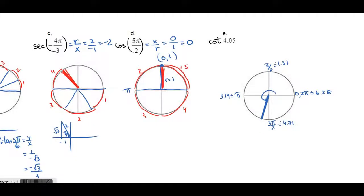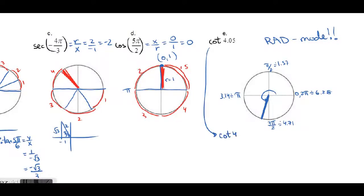For the last one, since 4.05 is not a special triangle angle, use a calculator — and make sure it is in radian mode, otherwise you won't get the right answer. Most calculators don't have a cotangent key, so recall that cotangent = 1/tangent. Flip the ratio (not the angle) — the angle stays as 4.05 radians — and type it in. You'll get approximately 0.7799.